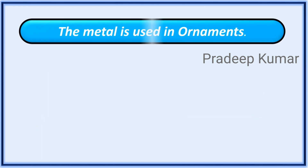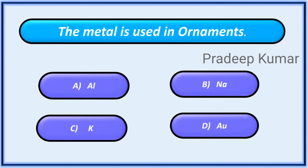Which metal is used in ornaments? Options: A. Aluminium, B. Sodium, C. Potassium, D. Gold.